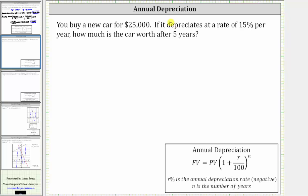We will answer this question using the annual depreciation formula shown below, where FV, the future value, is equal to PV, the present value, times the quantity one plus R divided by 100, raised to the power of N, where R percent is the annual depreciation rate, which will be negative.